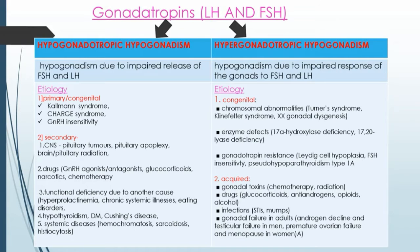Hypogonadotrophic Hypogonadism is due to impaired release of FSH and LH. The etiology is divided into Primary and Secondary. Primary causes are congenital or acquired: Kallmann syndrome, CHARGE syndrome, and GnRH insensitivity.